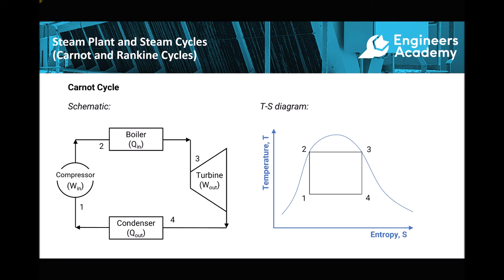The reason we pass through a compressor is because we have wet steam, not water. From two to three we pass through the boiler, heating that wet steam until it becomes dry steam. Three to four is the turbine, where we expand that steam to do mechanical work, and finally four to one is our condenser. On the temperature-entropy diagram on the right, we start our cycle at position one at the entrance to the compressor.